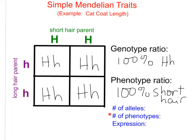So, in this example of a simple Mendelian trait for cat coat length, how many alleles are we working with? There is the big H and the little h — two different alleles. How many different phenotypes do we have? We can either have short hair or long hair, so only two phenotypes. And what is the expression? In a heterozygous situation, the dominant phenotype is going to be expressed.